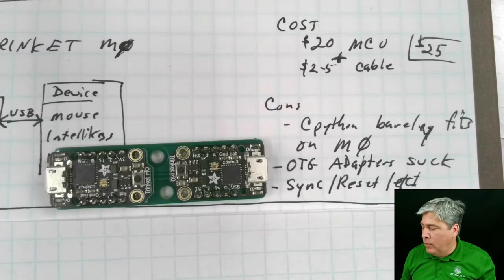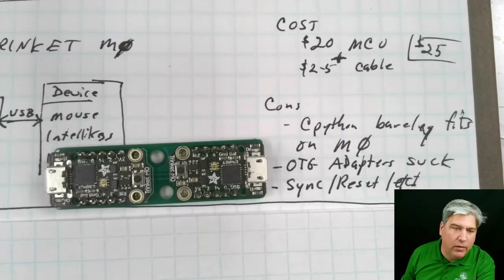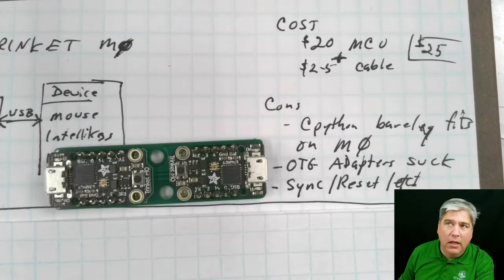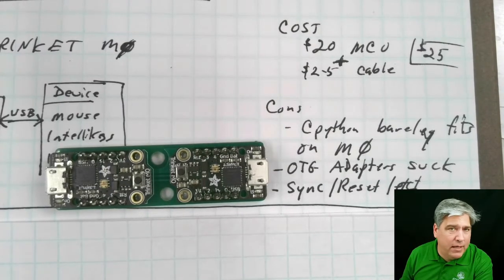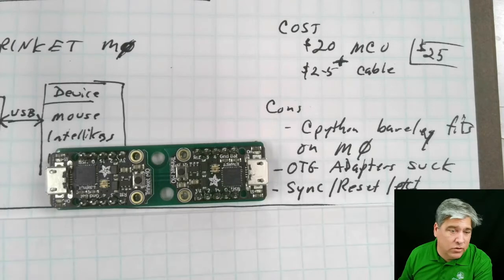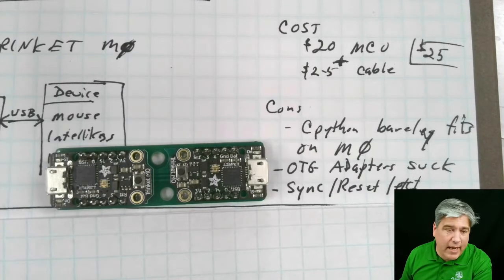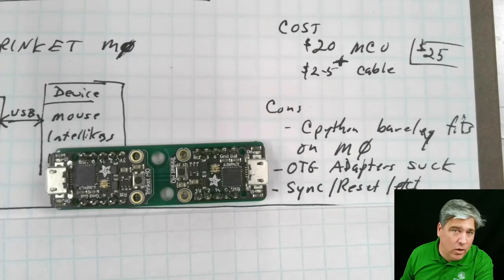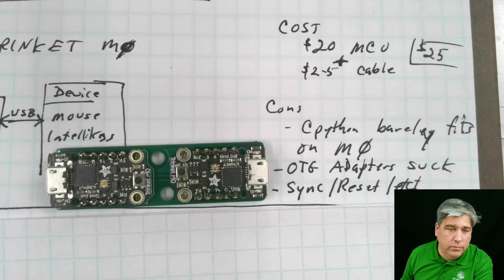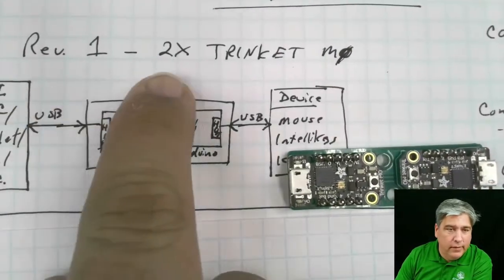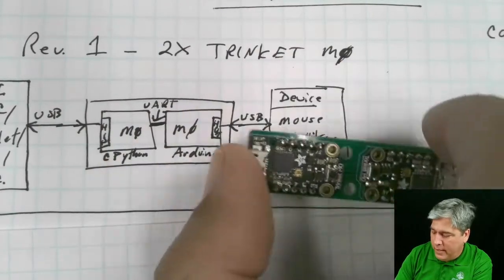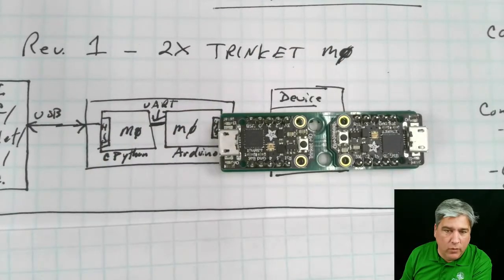But overall, this is a really good design. It works. It's been rock solid. We've got a bunch of them in production. Some people have limitations with them. But we haven't had many of them fail as far as design goes. There's no wires. There's no jacks. There's really not a lot that can go wrong with them. So we like this design. This is the Rev1 2 Trinket design.